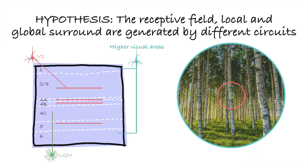Because these different connection types have different spatial extents, we hypothesized that the tiny receptive field region is generated by connections from the LGN that are spatially restricted. The local surround instead is generated by long-range horizontal connections within V1, and the global surround is generated by spatially very extensive feedback connections from higher visual areas.